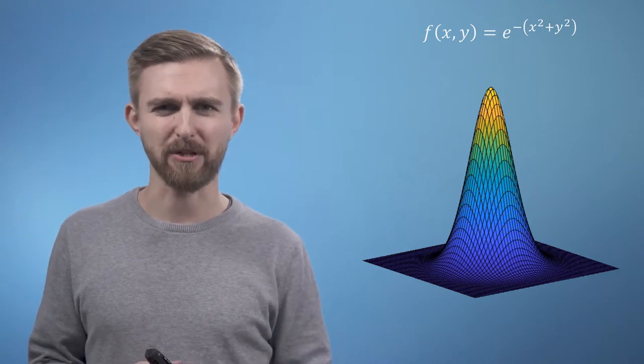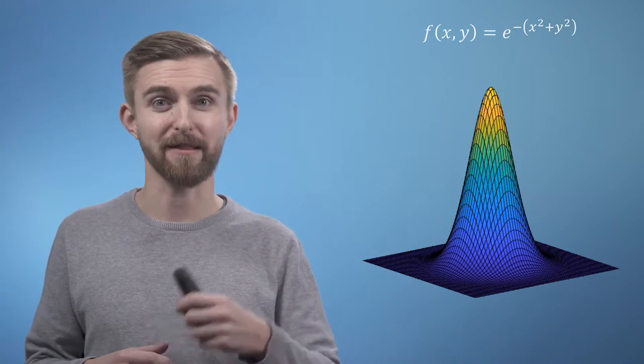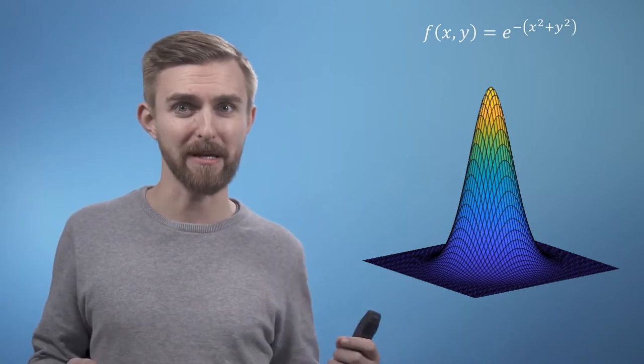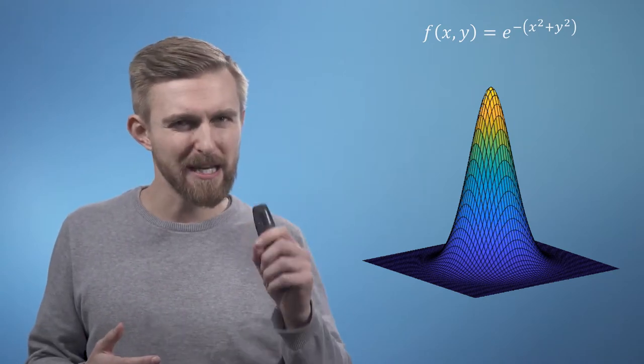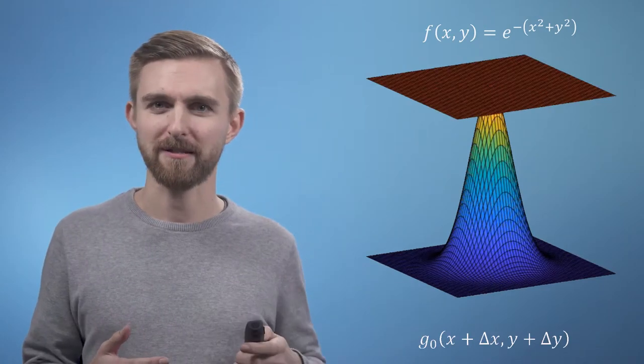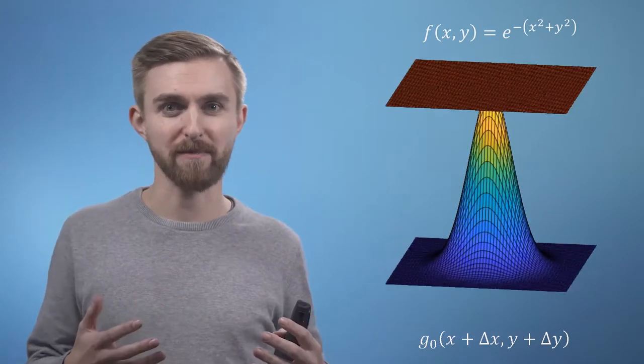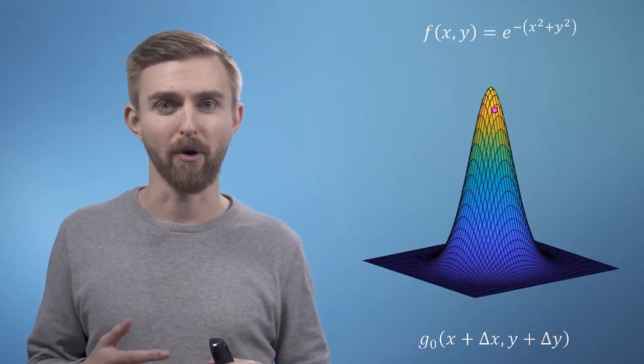Just as with the one-dimensional case, our zeroth order approximation is simply the value of the function at that point applied everywhere, which means in 2D this would just be a flat surface. So a zeroth order approximation at the peak would look like this. And a zeroth order approximation somewhere on the side of the bell would look a bit more like this.